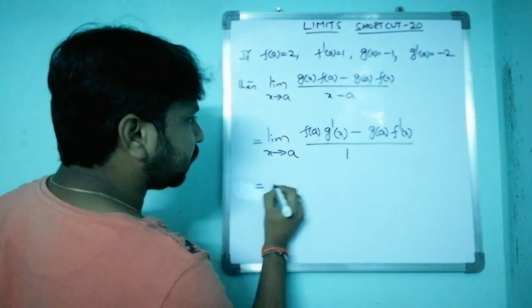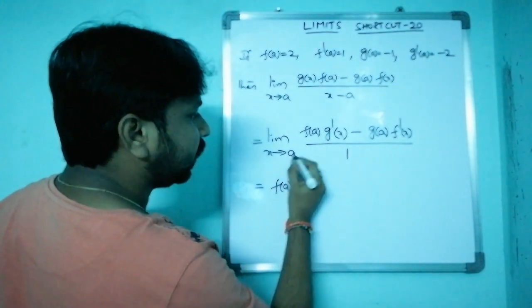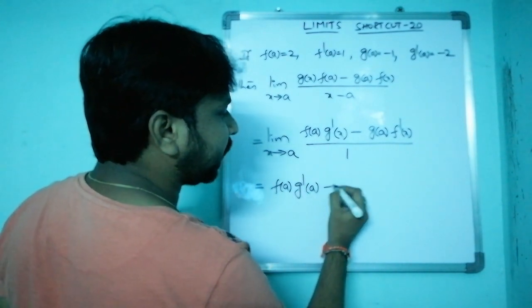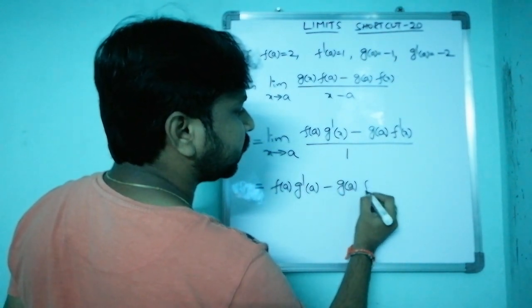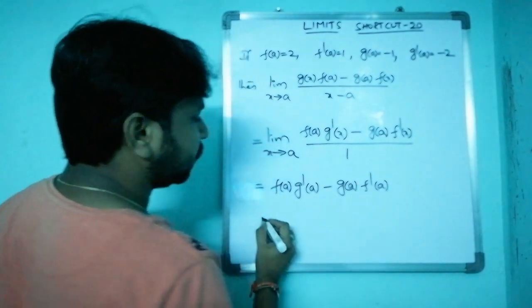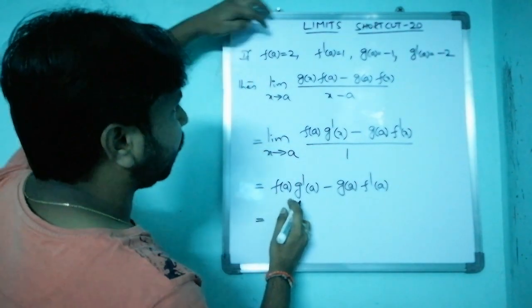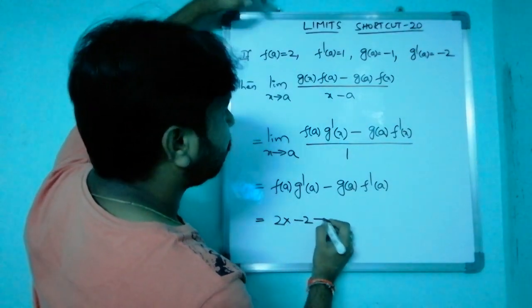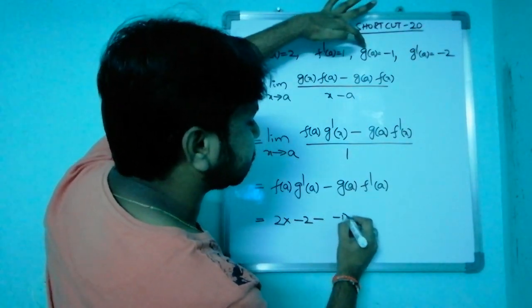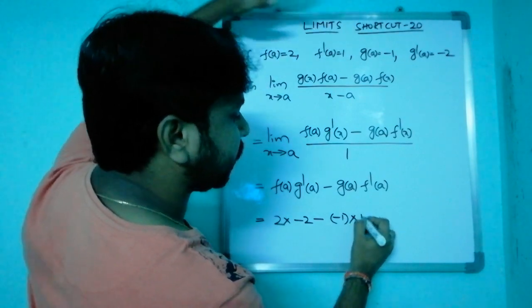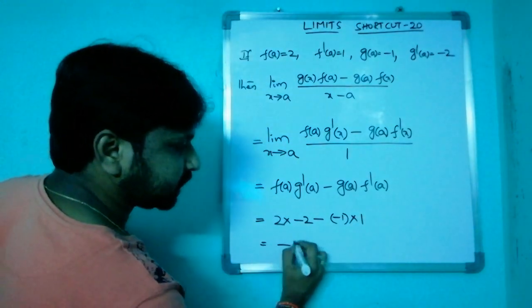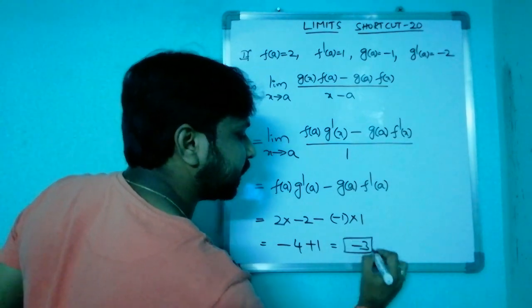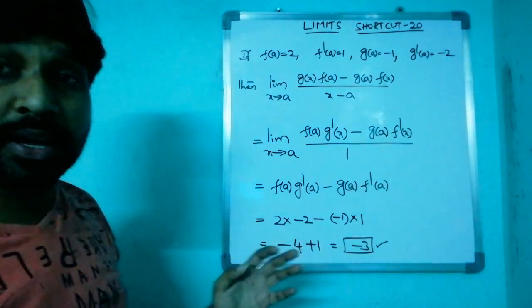Now substitute x = a: we get f(a)·g'(a) - g(a)·f'(a). Plugging in the values: f(a) = 2, g'(a) = -2, g(a) = -1, f'(a) = 1. This gives 2·(-2) - (-1)·(1) = -4 + 1 = -3. The answer is -3.